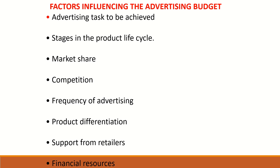Next we will see what are the factors influencing the advertising budget. The first factor is the advertising task to be achieved. The second one is stages of the product in the product life cycle. Market share, competition, frequency of advertising, product differentiation, support from retailers, and financial resources also influence the advertising budget and the process of setting the advertisement budget. That's all with the advertisement budget process. Thank you.